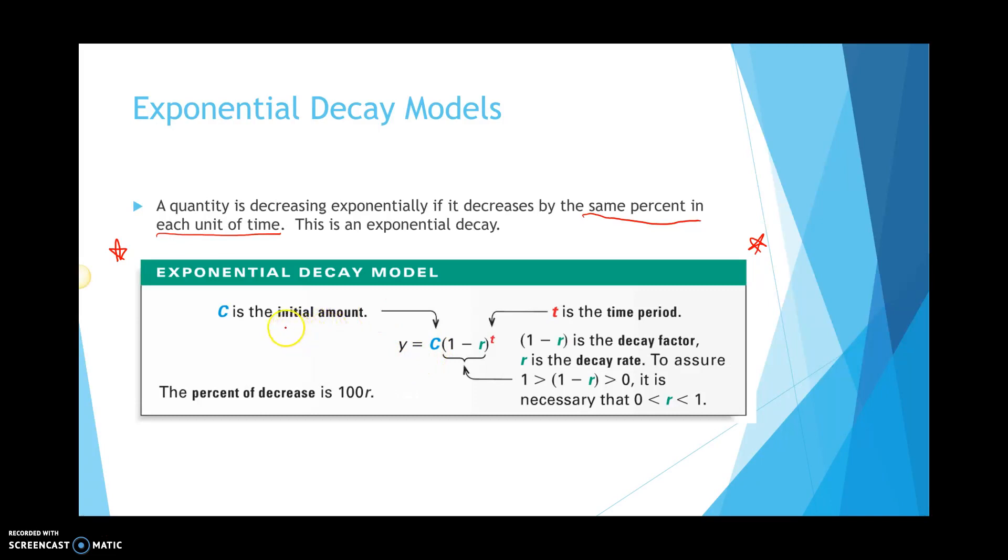c, again, is your initial amount, which is your starting rate. Then, we have 1 minus r in the parentheses. r is your rate. r represents your rate. You do need to change your rate to a decimal when you're solving. And then, t is your time.